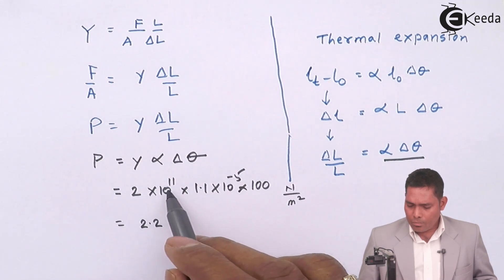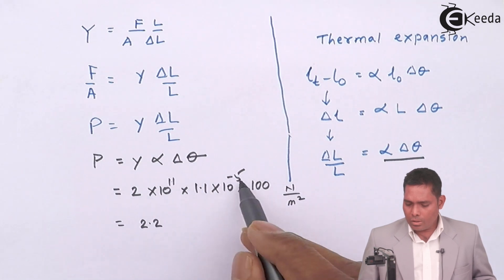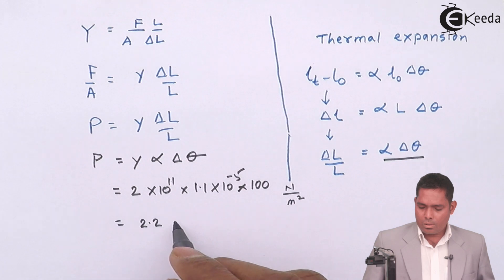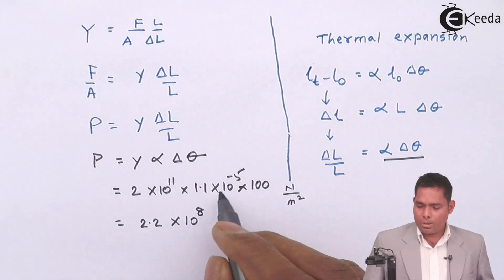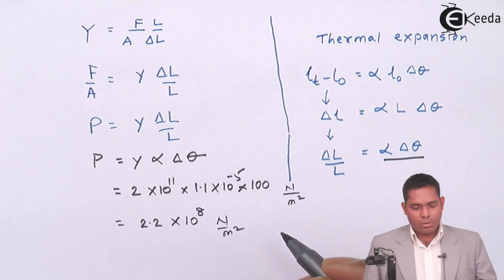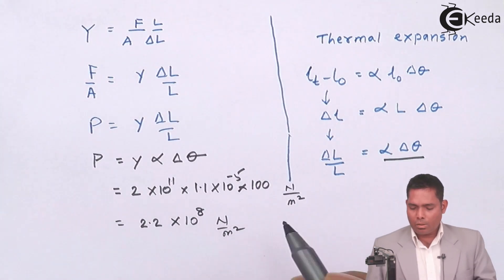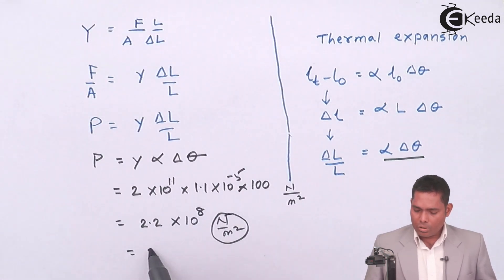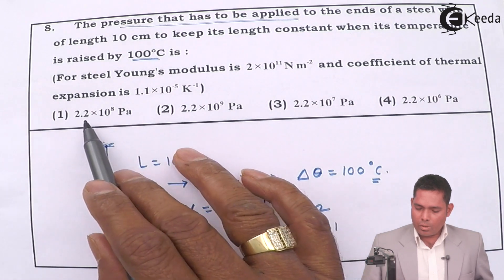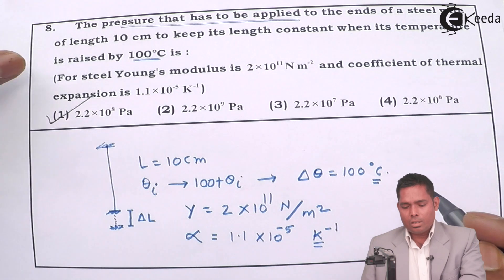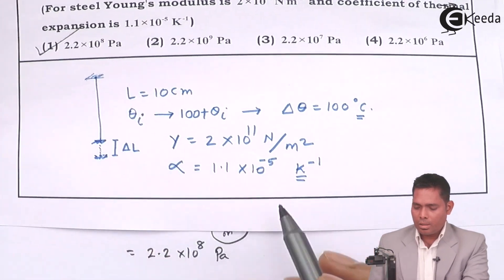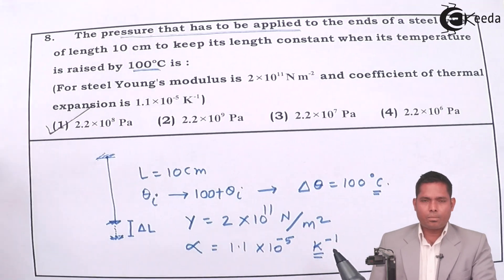So the answer is 2.2×10⁸. Since newton per meter square is also known as pascal, the answer is 2.2×10⁸ pascal. Looking at the options, the first option is 2.2×10⁸ pascal and that is the correct answer to this question. Thank you.